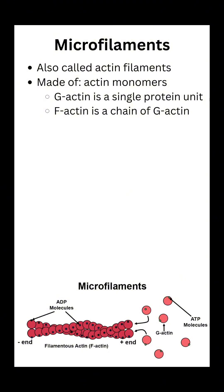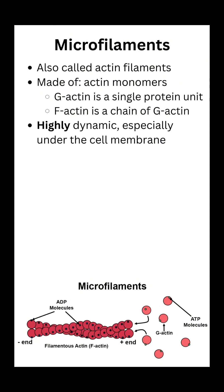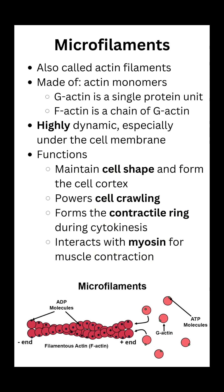Starting with our microfilaments — we also call them actin filaments because they are made up of actin monomers. A single actin protein is called G-actin, which stands for globular actin. When we link G-actins together into chains, they form F-actin, which stands for filamentous actin. Microfilaments are the smallest of the three cytoskeletal fibers but also the most dynamic. They directly attach to the plasma membrane and are essential for cell shape, forming the cell cortex — a supportive layer beneath the membrane. They power cell crawling by building structures like lamellipodia and filopodia, create the contractile ring during cytokinesis, and interact with myosin to produce muscle contraction.